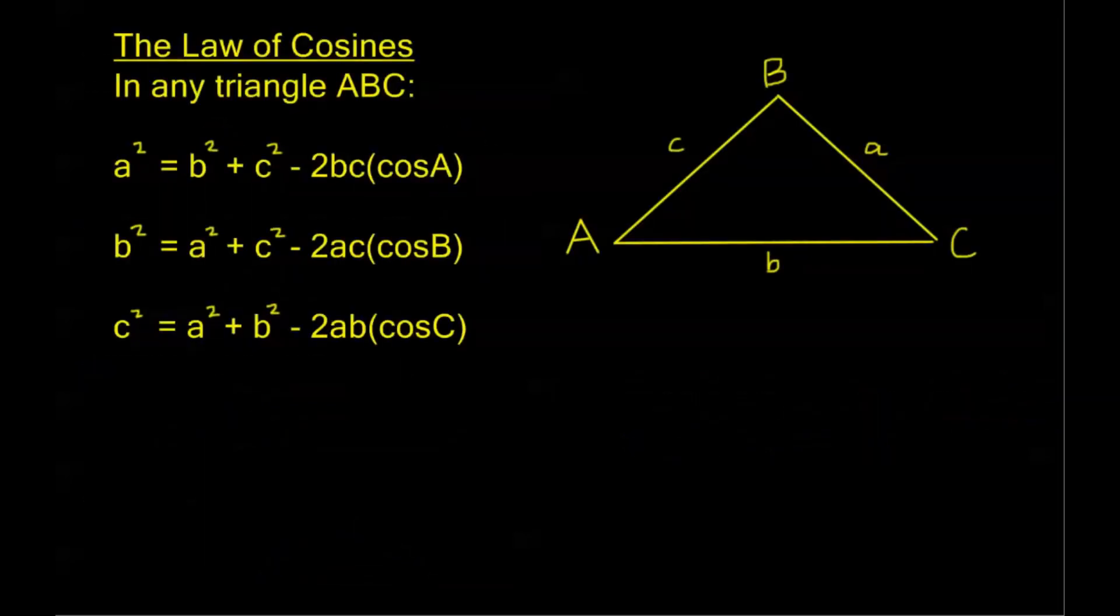Now the Law of Cosines is as follows. In any triangle ABC we have this relationship: a squared equals b squared plus c squared minus 2bc cosine A, b squared equals a squared plus c squared minus 2ac cosine B, and c squared equals a squared plus b squared minus 2ab cosine C.